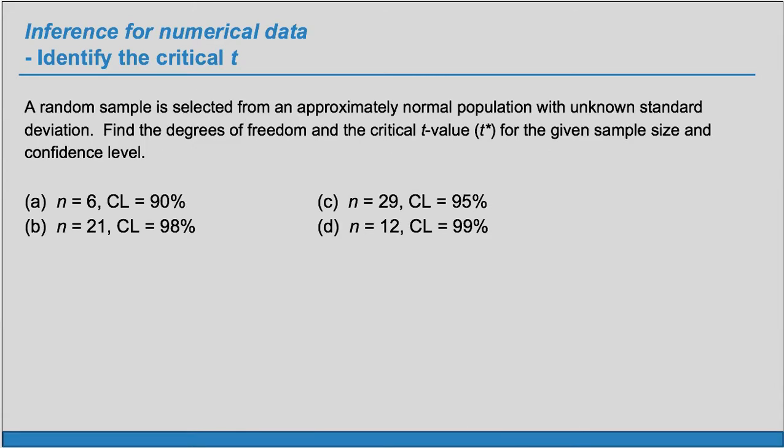A random sample is selected from an approximately normal population with unknown standard deviation. Find the degrees of freedom and the critical t-value, t-star, for the given sample size and confidence level.